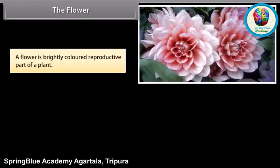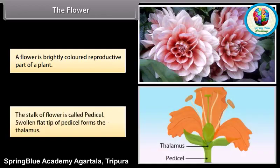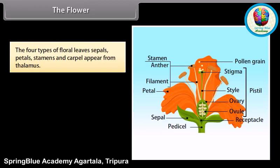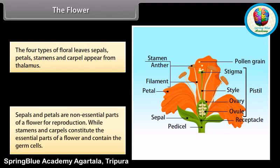A flower is a brightly colored reproductive part of a plant. The stalk of the flower is called the pedicel. The swollen flat tip of the pedicel forms the thalamus. The four types of floral leaves — sepals, petals, stamens, and carpels — appear from the thalamus. Sepals and petals are non-essential parts for reproduction, while stamens and carpels constitute the essential parts and contain the germ cells.